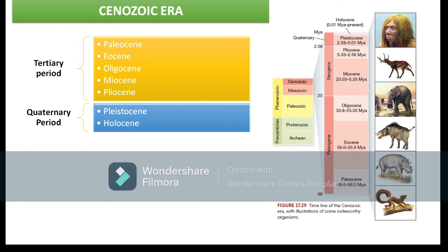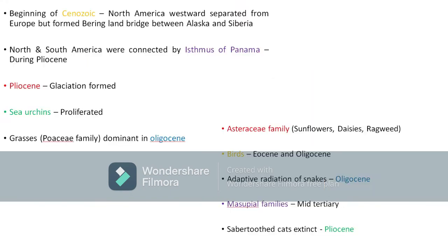To remember the Tertiary epochs in order: Paleocene comes first since 'paleo' means oldest, followed by Eocene, Oligocene, Miocene, and Pliocene last. This sequence is easy to remember for exams. The Quaternary period has only two epochs: Pleistocene and Holocene. The diagram on the right shows different organisms that evolved during these different epochs.